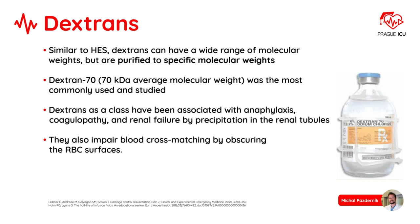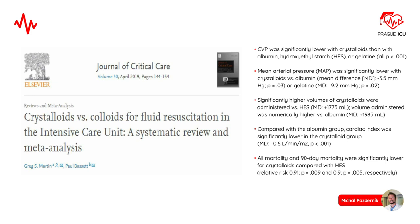Finally, I would like to cite results of one of the most important studies on this topic from 2019. CVP was significantly lower with crystalloids than with albumin, hydroxyethyl starch, or gelatin. Mean arterial pressure was significantly lower with crystalloids versus albumin or gelatin. Significantly higher volumes of crystalloids were administered versus hydroxyethyl starch, and volume administered was numerically higher versus albumin. Cardiac index was significantly lower in the crystalloid group compared with albumin. All-cause mortality and 90-day mortality were significantly lower for crystalloids compared with hydroxyethyl starch.